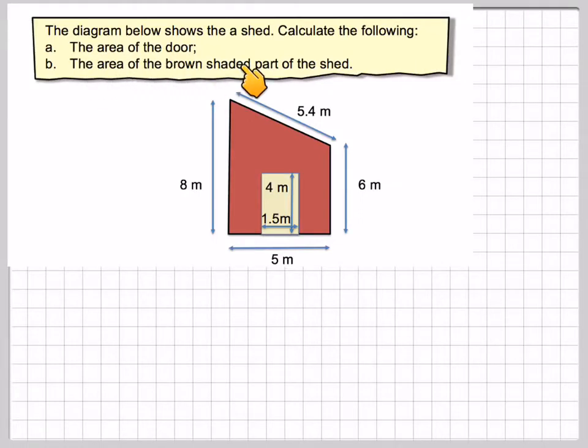The diagram below shows a shed. Calculate the following: the area of the door, which is this part here, the area of the brown shaded part of the shed, which is this bit here, not including the door.